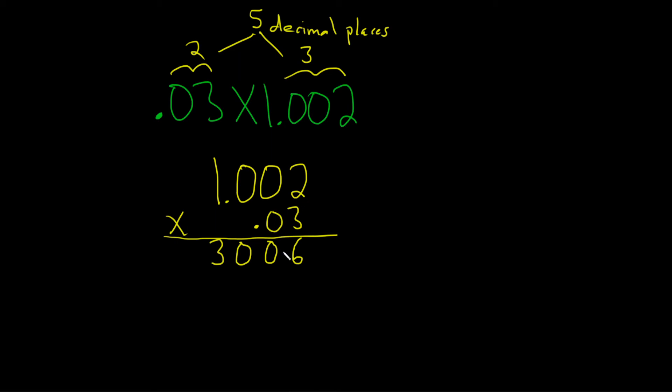Then we go to 0. 0 times 2 is 0. You write it here, you write it underneath. 0 times 0 is 0. 0 times 0 is 0. 0 times 1 is 0. It's just really easy. It's all 0s.